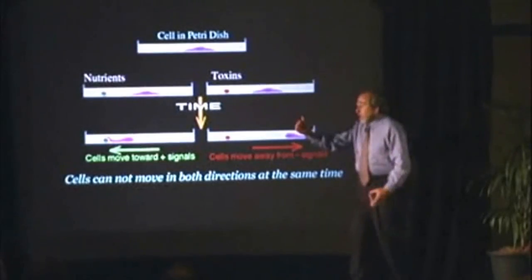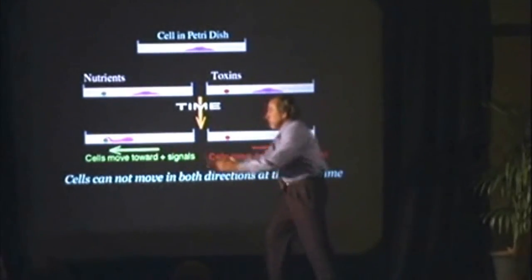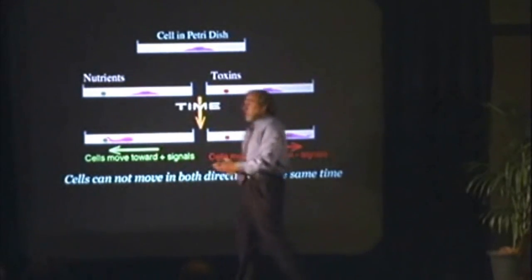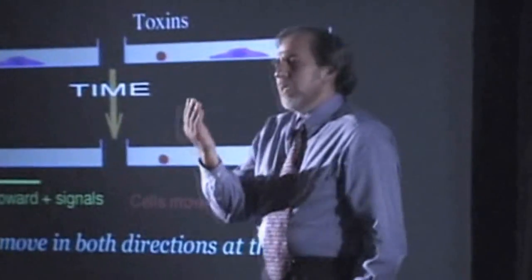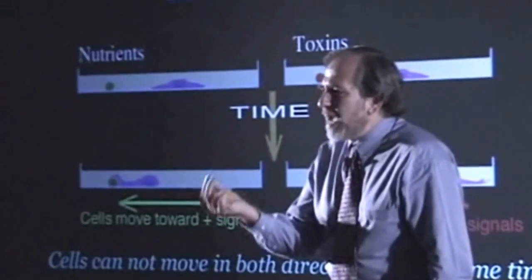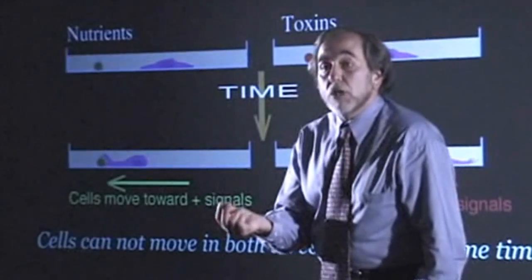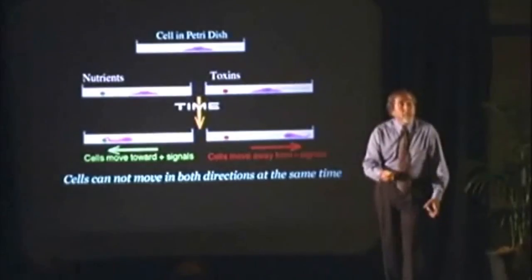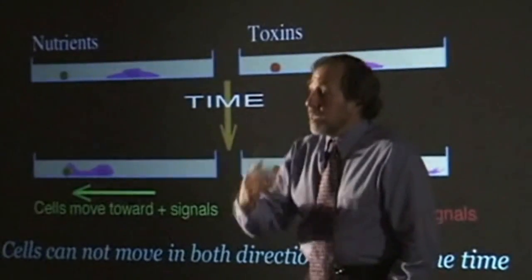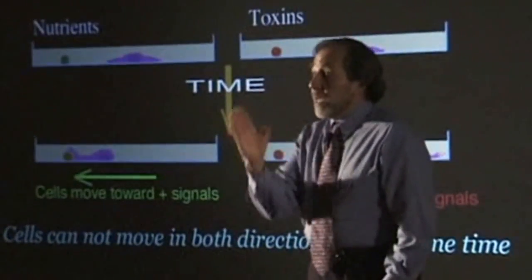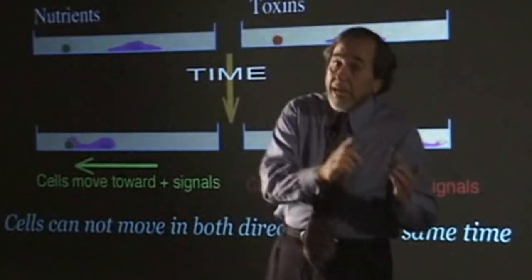Why is that important? If I'm a cell and there are toxins but food here, I'm going to move toward the food. If I'm a cell and there are only toxins, I'm going to move away. Can a cell move forwards and backwards at the same time? The answer is no. When confronted with an environmental signal, the cells have to make a decision to be in growth or to be in protection.